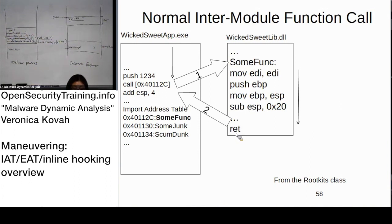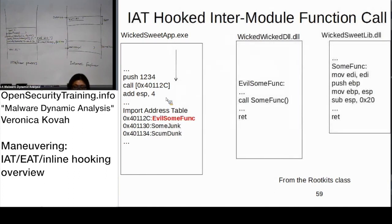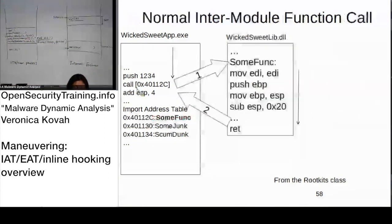Then at return, it comes back. This is the normal procedure. However, if there is IAT hooking, some malicious code changes the address at 40112C. The code performs the same address-based dereferencing, but the entry got changed.